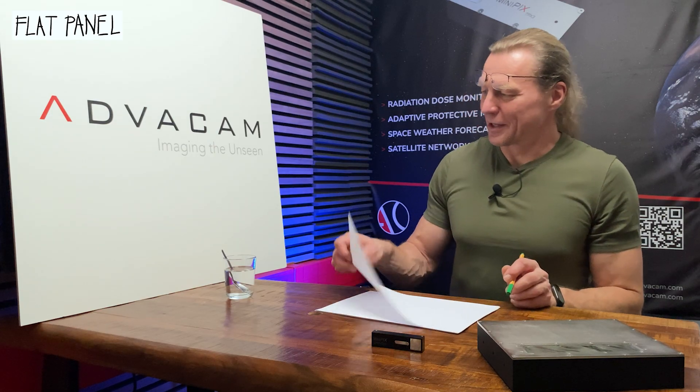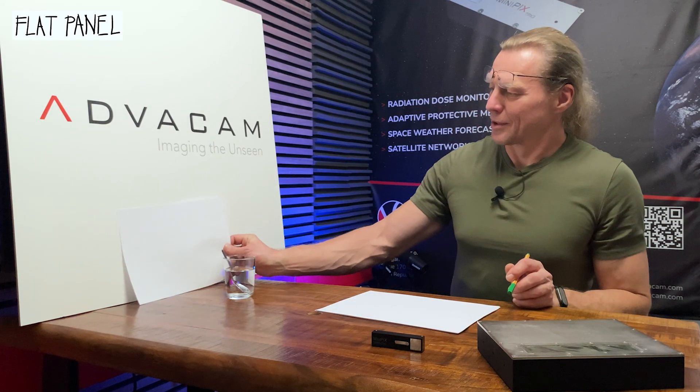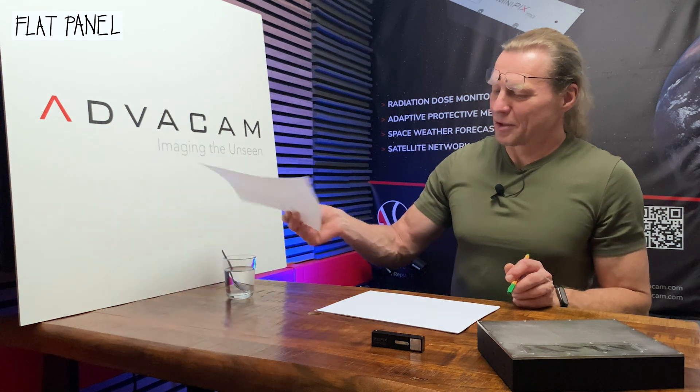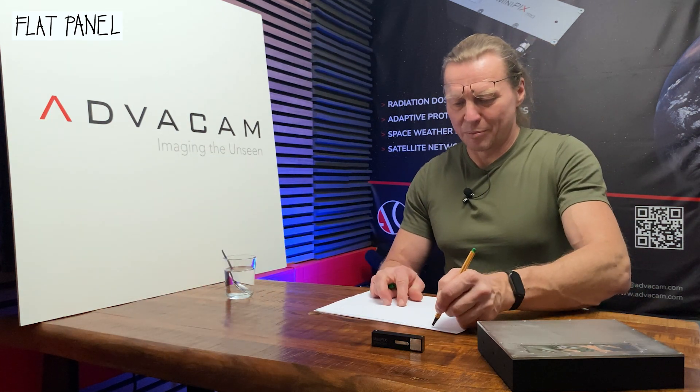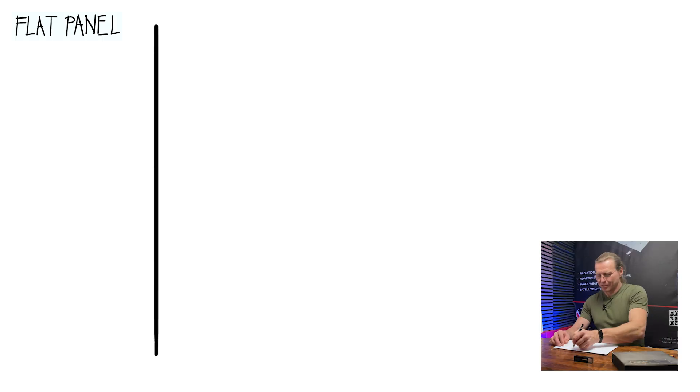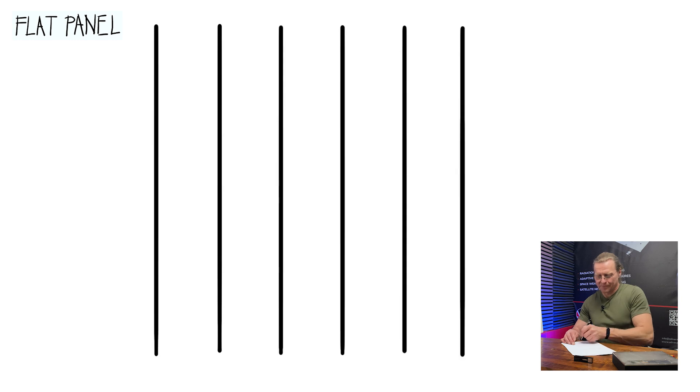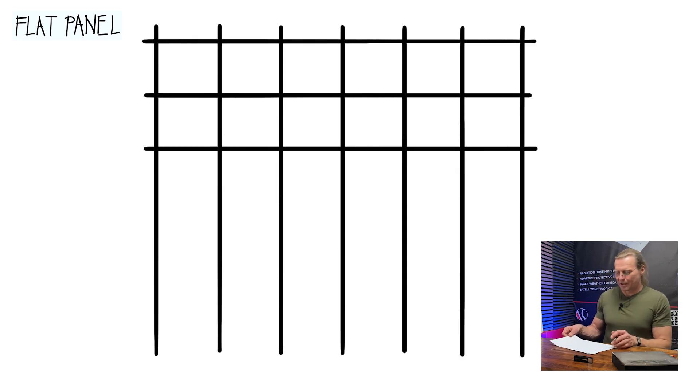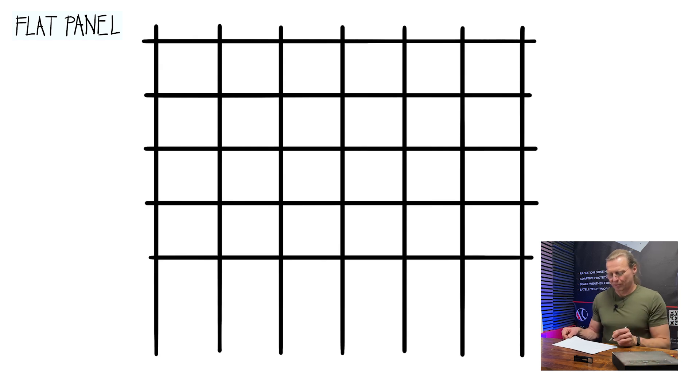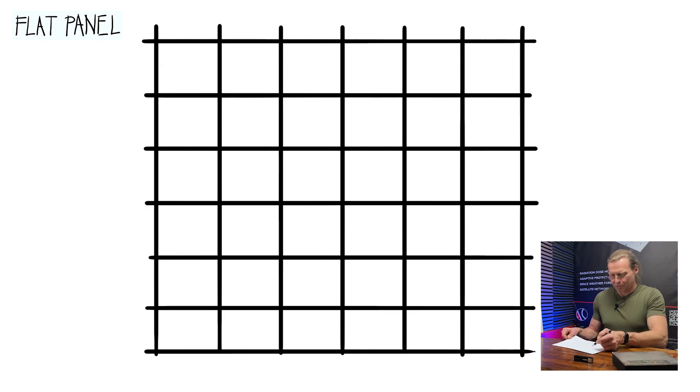So basically we can imagine our sensor like this piece of paper and of course this piece of paper consists of pixels. There are many pixels in the plane. I will draw just a few. So there is such a matrix. We need to make it sensitive. So whenever some radiation would fall into one pixel, the pixel has to be able to detect incoming radiation intensity, amount of light or x-rays coming there.